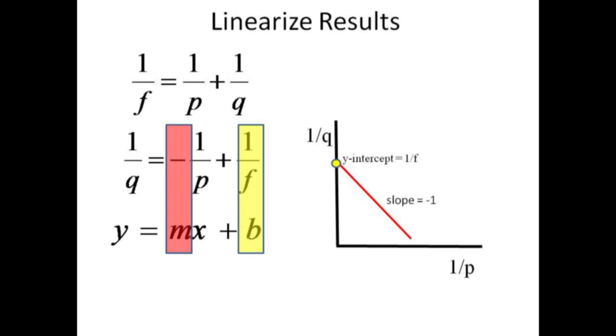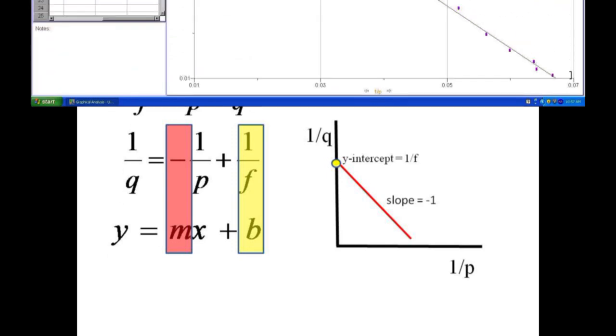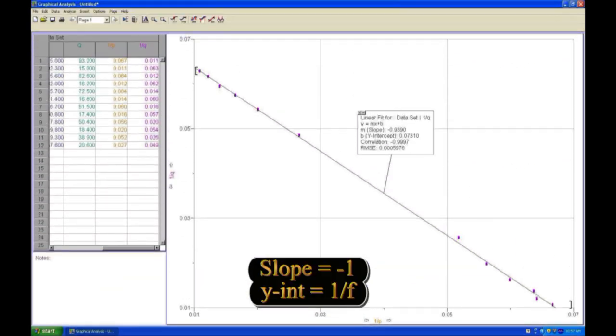The slope should be negative 1 and the y-intercept is the inverse of f. Here is our plot of 1 over q versus 1 over p with a linear fit. The inverse of the y-intercept should be compared with the focal length of the lens.